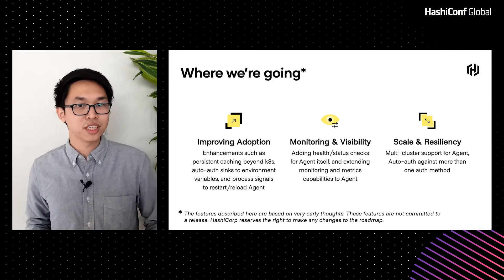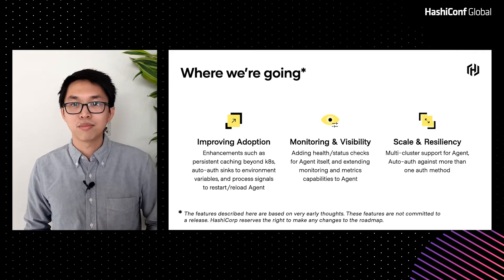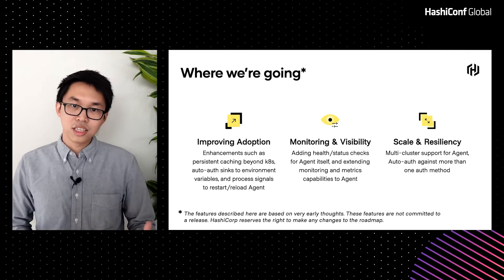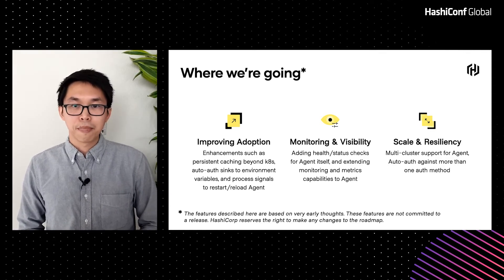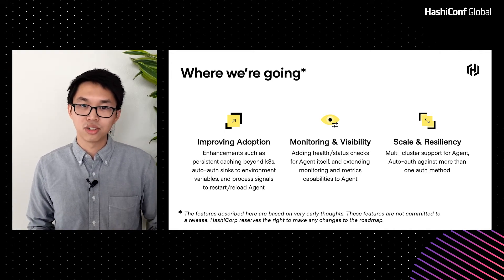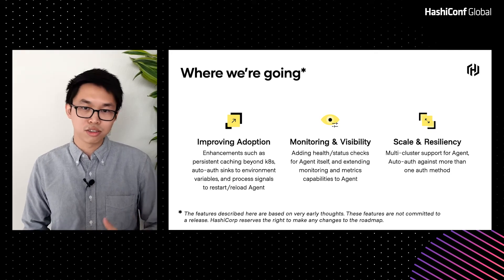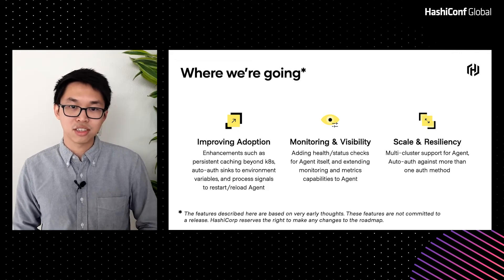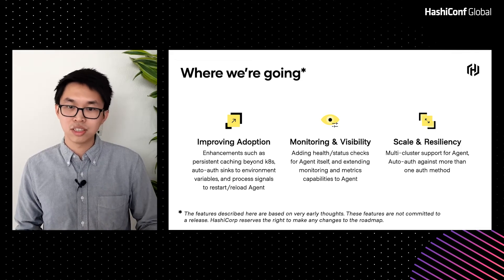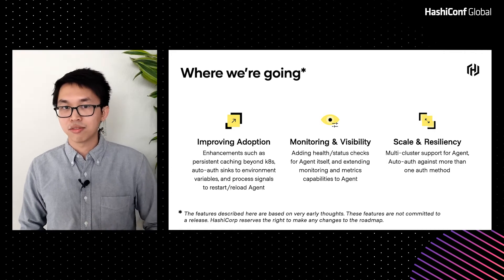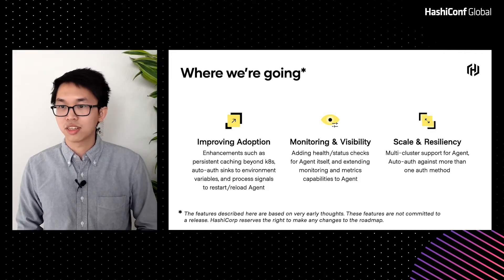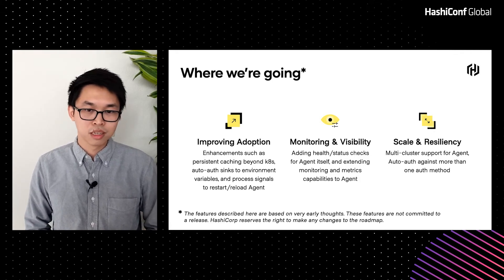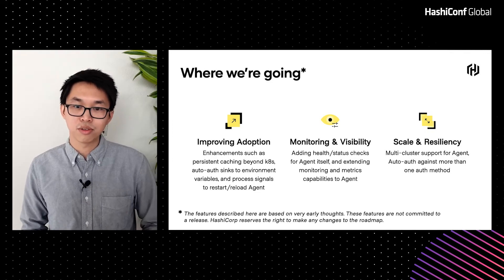Now let's talk about some future-facing features for Agent. We're looking into three overarching themes: improving adoption, monitoring and visibility, and scale and resiliency. On the adoption side, we're looking into enhancements such as allowing persistent caching beyond Kubernetes, adding auto-auth syncs to environment variables, and allowing Agent to restart all or part of its subsystems through process signals. On monitoring and visibility, we'd like to add health checks and status checks specific to Agent, as well as additional metrics for better insights into deployments. On scaling and resiliency, we're thinking of adding multi-cluster support so Agent can talk to different clusters as a fallback mechanism, and also multi-auto-auth support for dropping different Vault tokens for distinct applications.